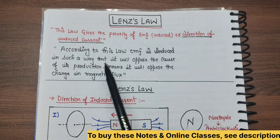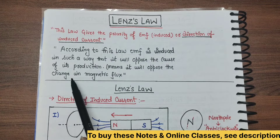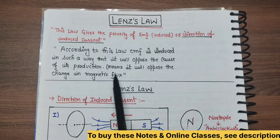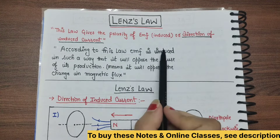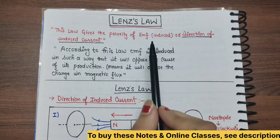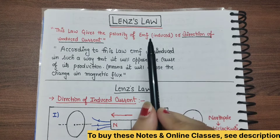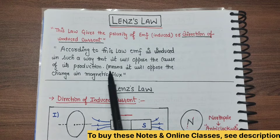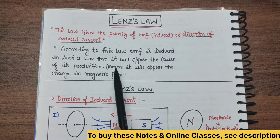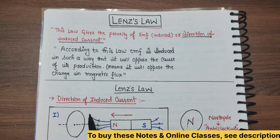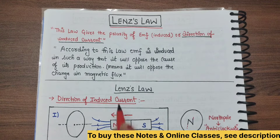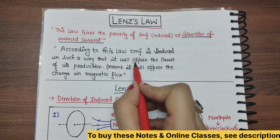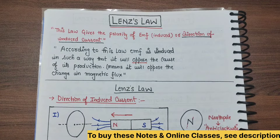In other words, it will oppose the change in magnetic flux. The direction of the induced EMF or current will be such that it opposes the change in magnetic flux — that is, it opposes the cause of production.